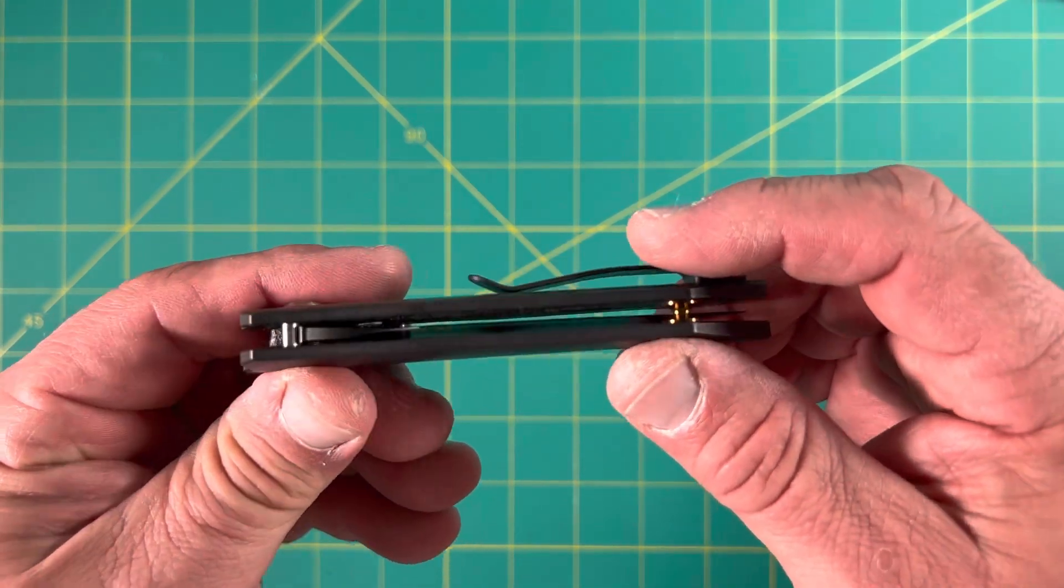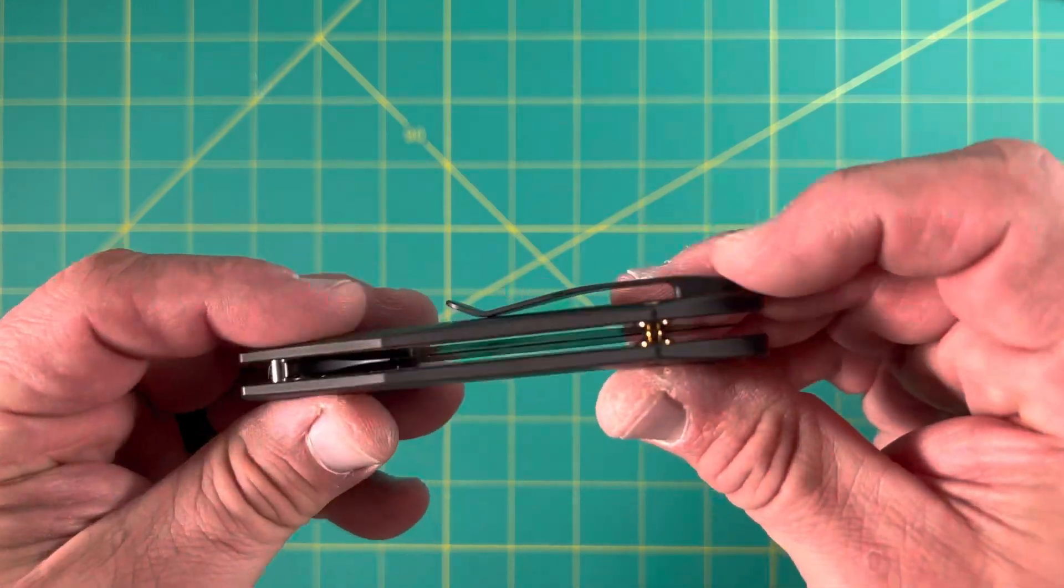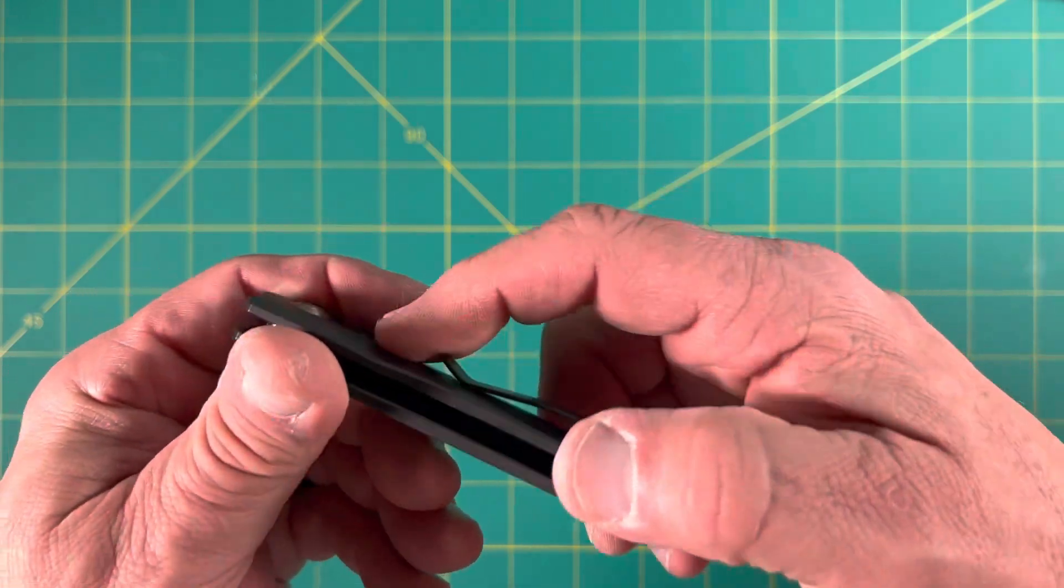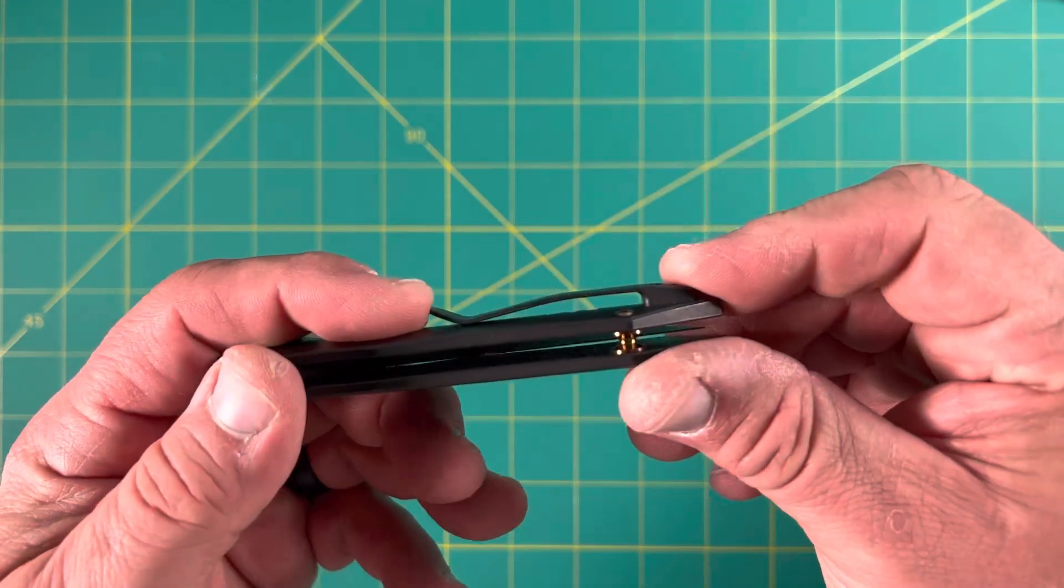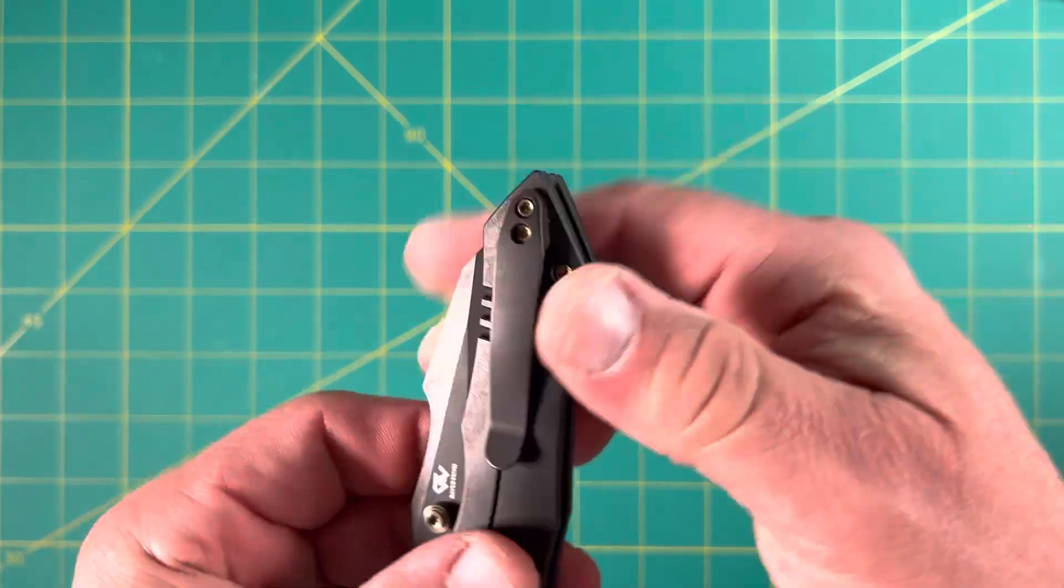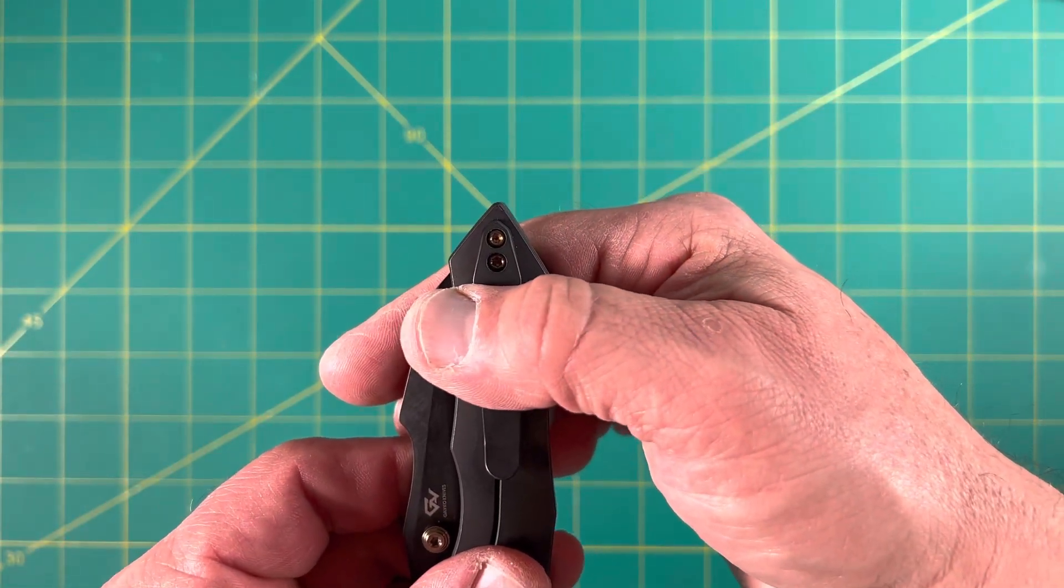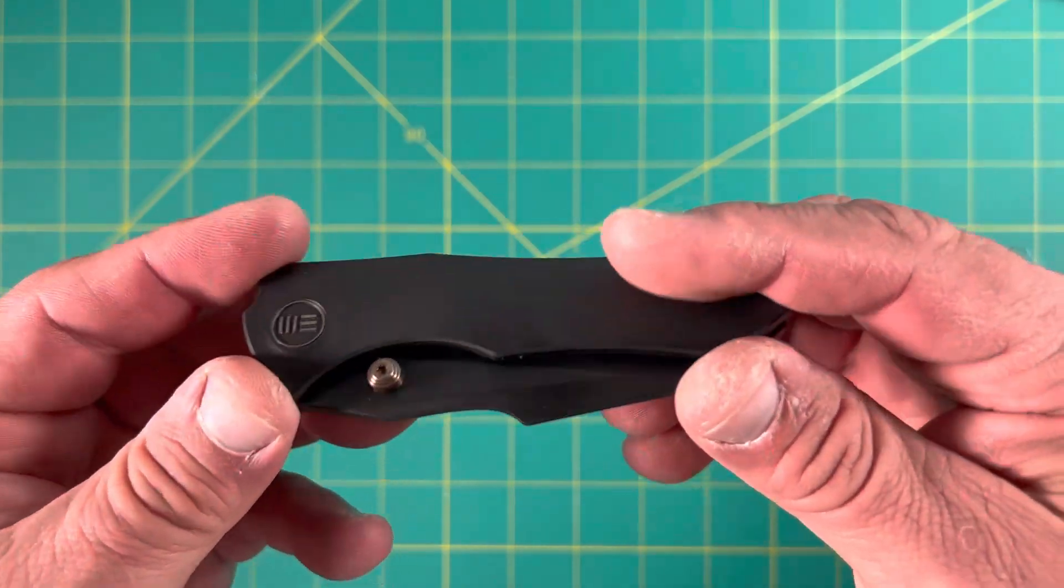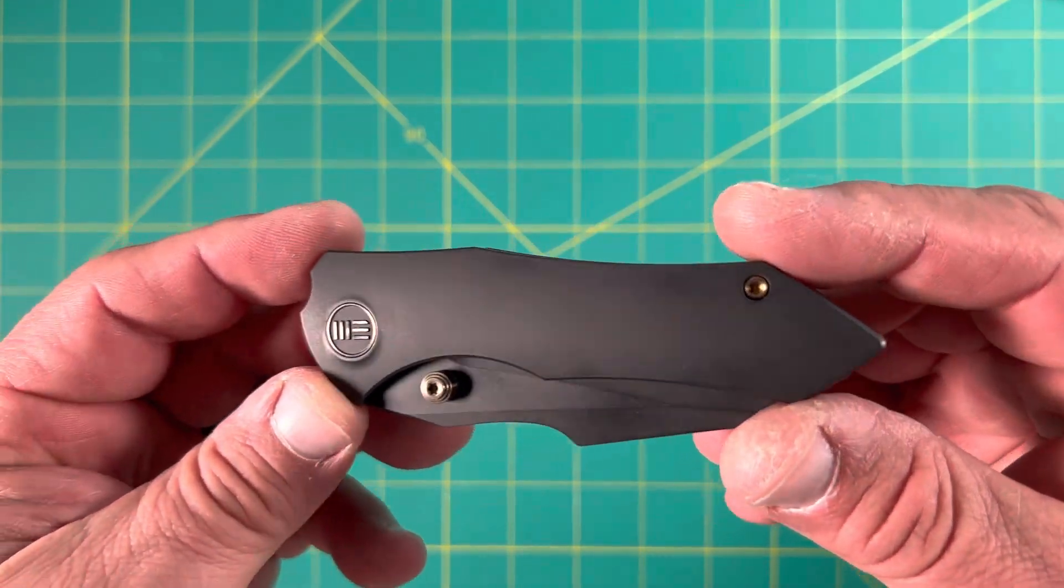One thing you'll also notice is that this is a milled titanium clip. Looks kind of like not, but it is. Very nice shape, really comfortable, slides in and out of the pocket really well. Relatively deep carry. It sticks up a little bit but this is more of the design that comes from Gavco, so if you know Gavco and their designs, this is really nice.